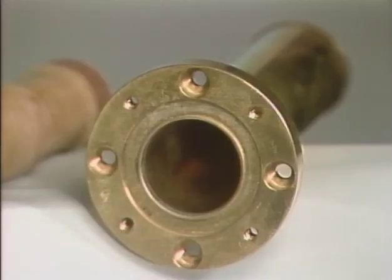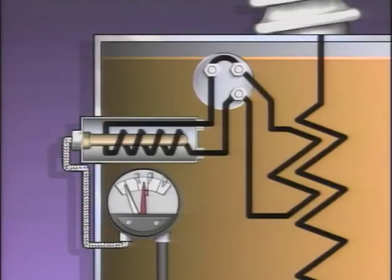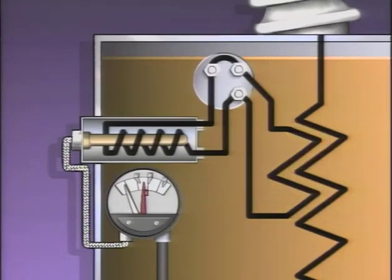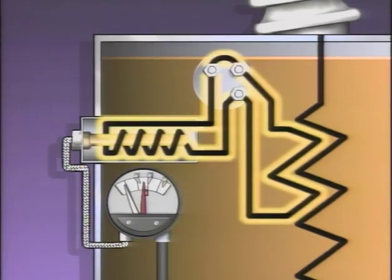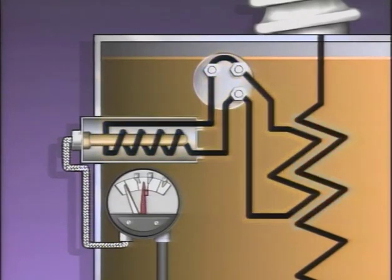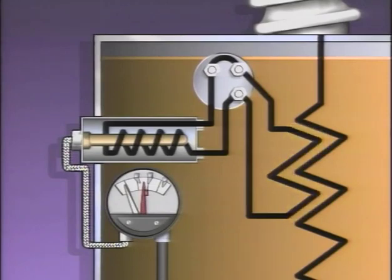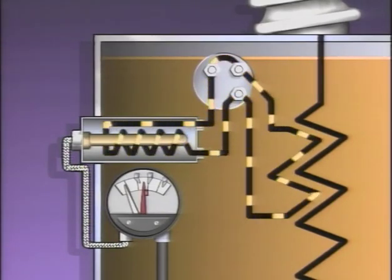The function of the heating element can be explained using an illustration that includes a power transformer winding, a current transformer, a terminal block, a heating element, a temperature-sensitive bulb, capillary tubing, and the winding temperature gauge. The heating element is connected to the secondary of the current transformer, which surrounds part of the power transformer winding or winding lead. The current transformer provides a current that's proportional to but much lower than the load current of the power transformer.